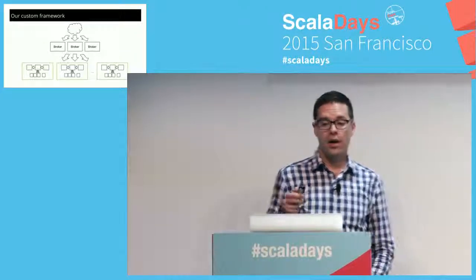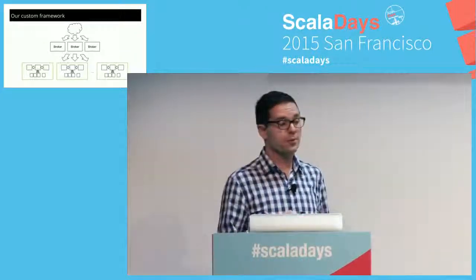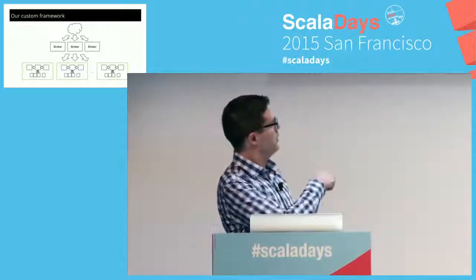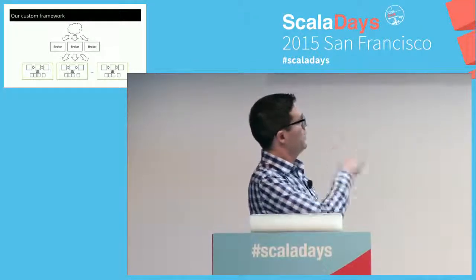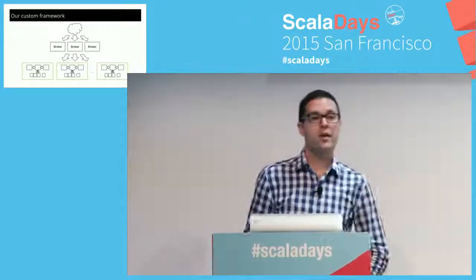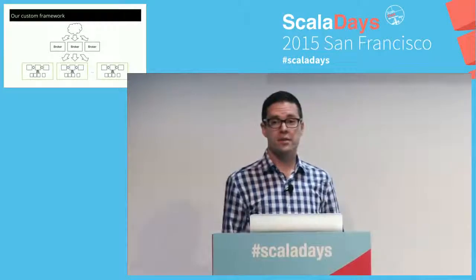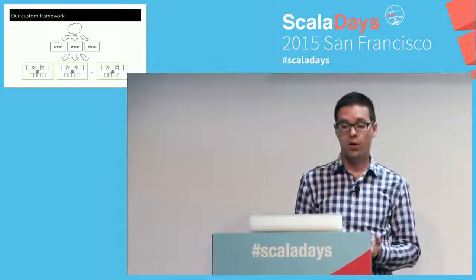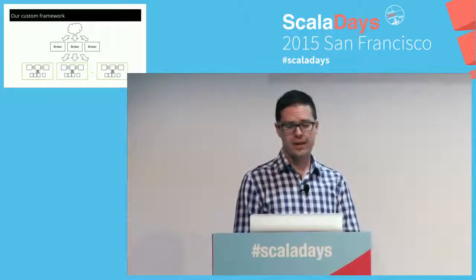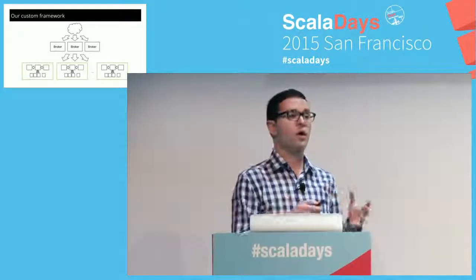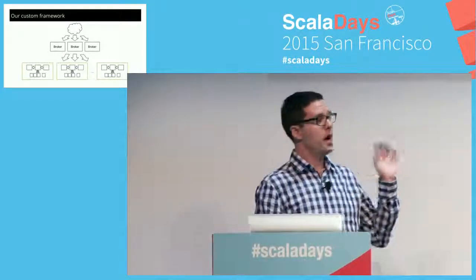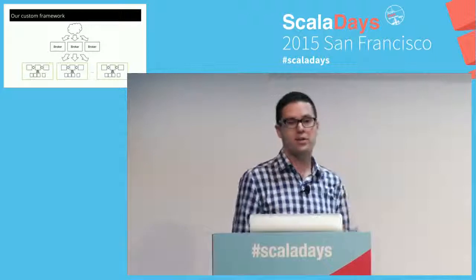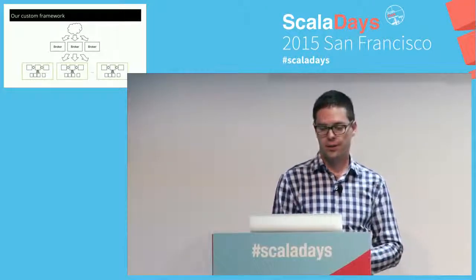In a cluster, you can have N of these nodes, all behind a broker or a redundant broker, with the client accessing everything above that.